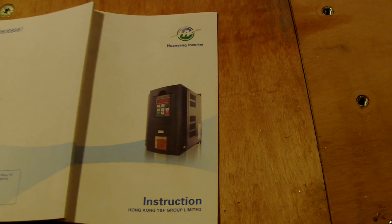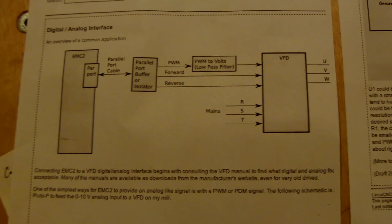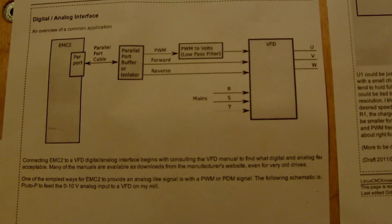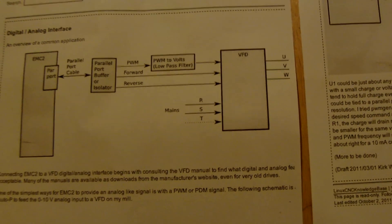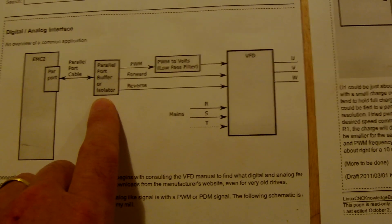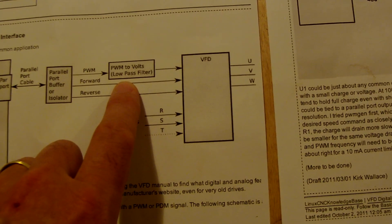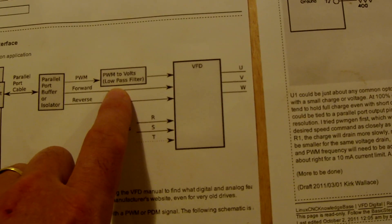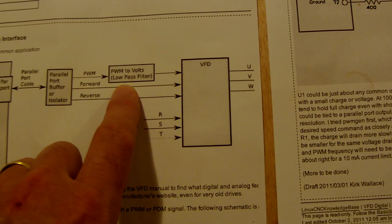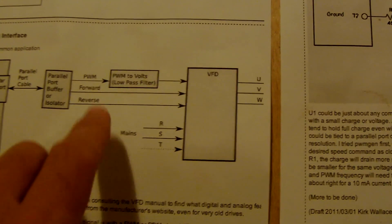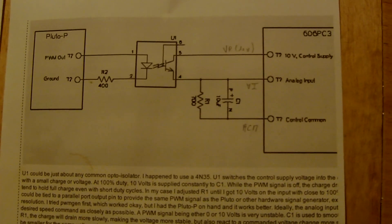I searched on the LinuxCNC website and found a forum post. I printed the post which gives a sketch of what is possible to do. What you need to understand is that this part — the parallel port buffer or breakout board — is already installed on the machine, but a low-pass filter needs to be created to make the link between LinuxCNC and the VFD. This box has a sketch.